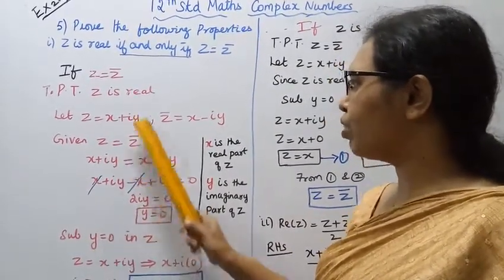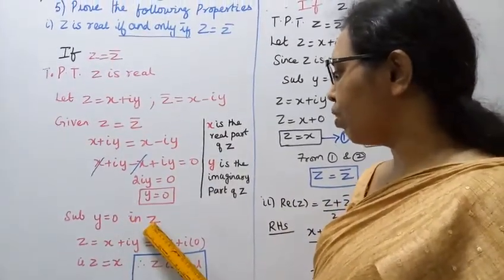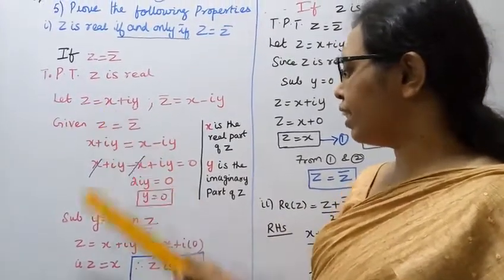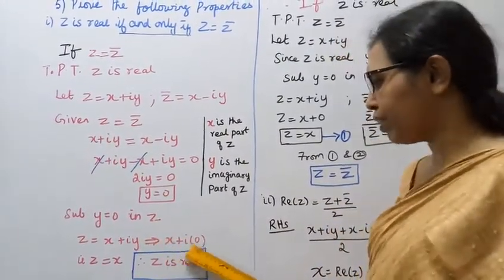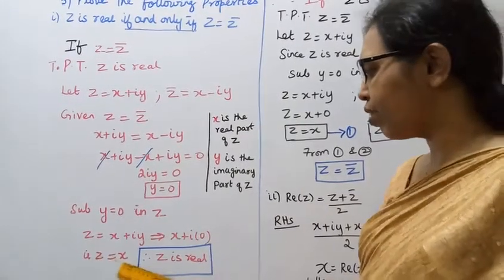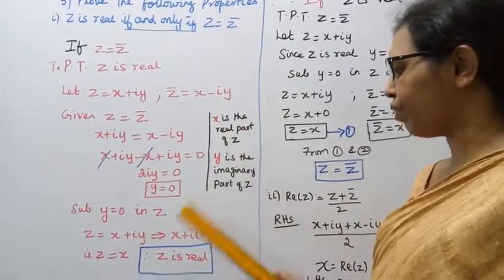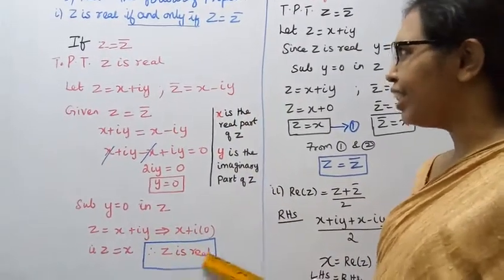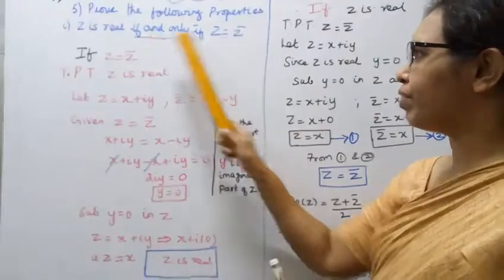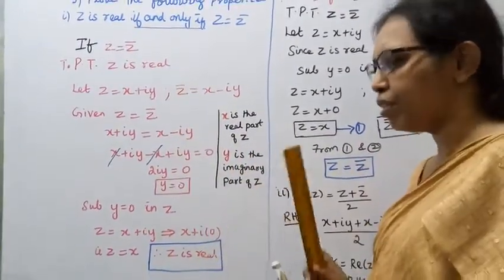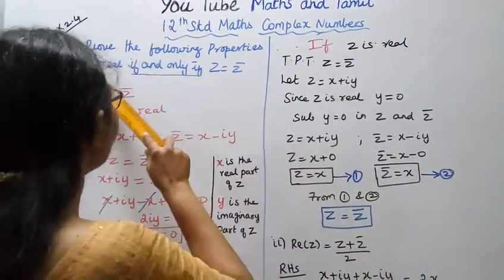Therefore y equals 0. Substituting y equals 0 into z: z equals x plus i times 0 equals x. Since x is the real part of z, z is real. Hence z equals z̄ implies z is real.